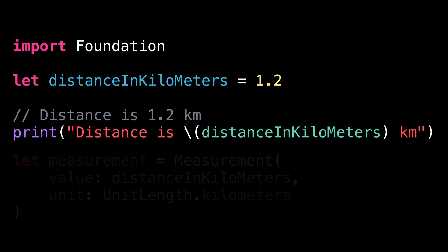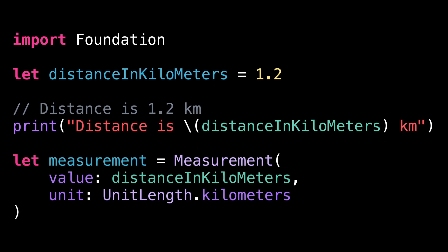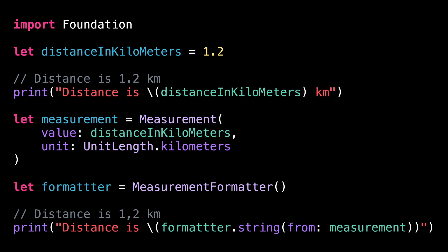First, we need to turn our numerical value into a measurement. That measurement will store both the numerical value, but also the unit in which it is expressed. Then we can create a measurement formatter and use it to display the measurement we've just created.